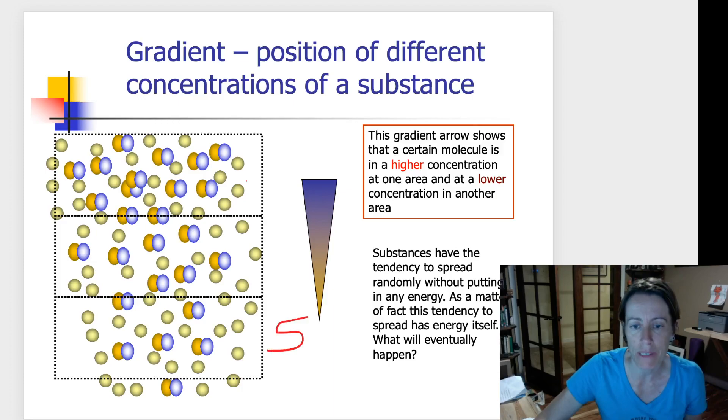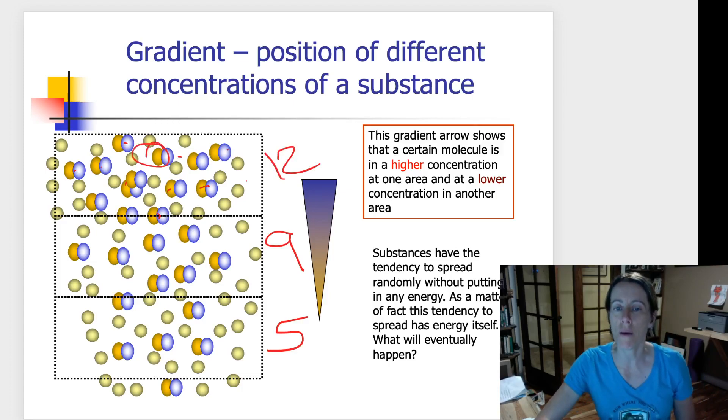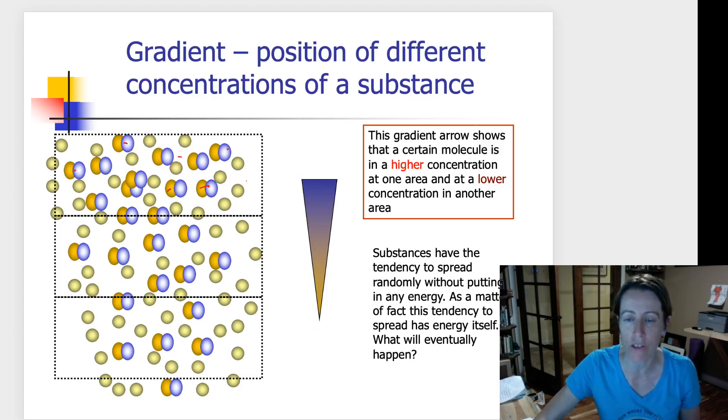And if we were to look at how these are spread out and count how many of this substance is in each area, there's maybe six of them in the top area, about nine of them in the middle, and about twelve of them at the bottom. So clearly, there is more of them up here and less of them down here. And that's what this gradient triangle is representing for you. It shows you that there's lots of this molecule up here and fewer of this molecule down here.